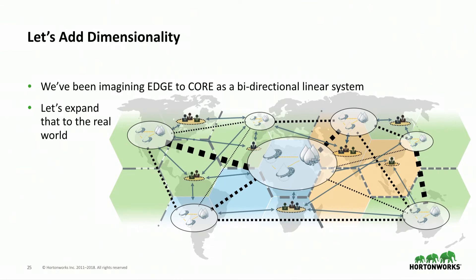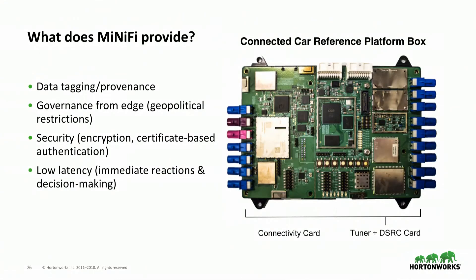Adding dimensionality — going global across large networks. This is a Qualcomm radio platform box designed for a connected car prototype. It read data off the CAN bus and infotainment system and provided data tagging and provenance — governance from the edge.